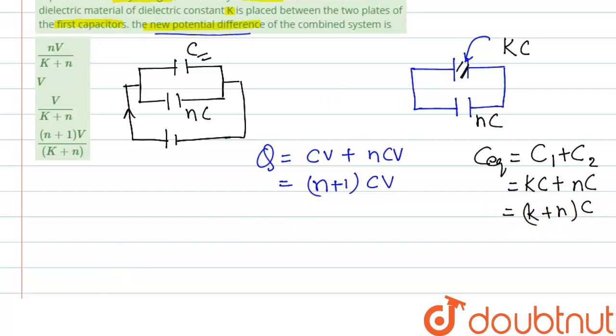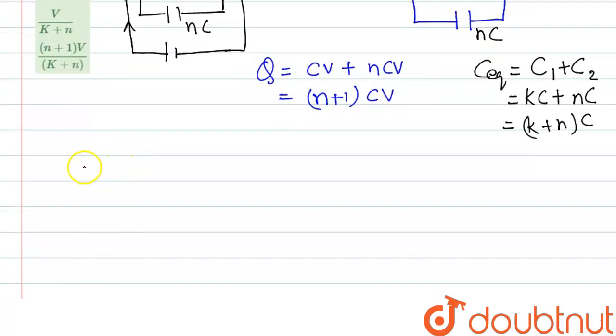So how can we find the voltage? We can find the voltage using the equation V = Q/C. So here the new potential difference is V' and C is C_equivalent. If the charge is Q, we can write here (n+1)CV divided by C_equivalent, that is (k+n)C. So here C and C both will be cancelled out, so new potential will be (n+1)/(k+n) times V.